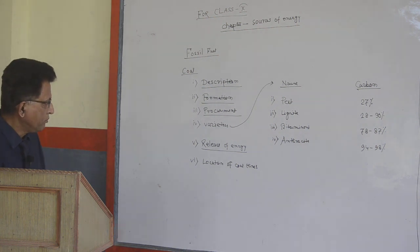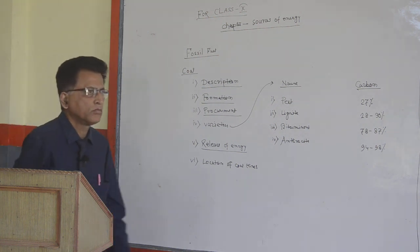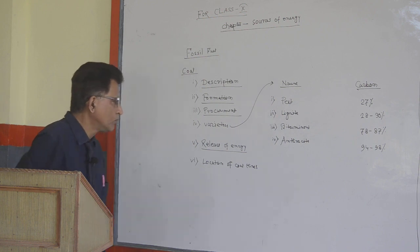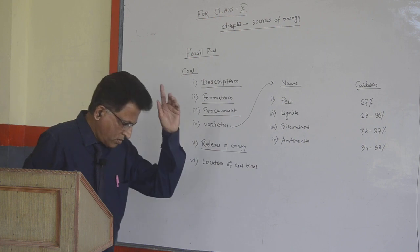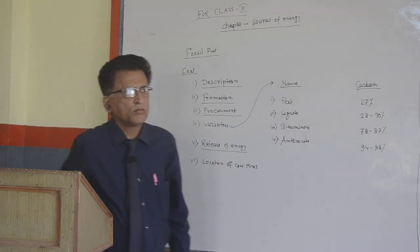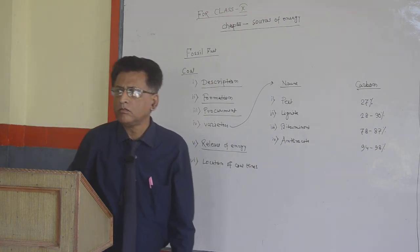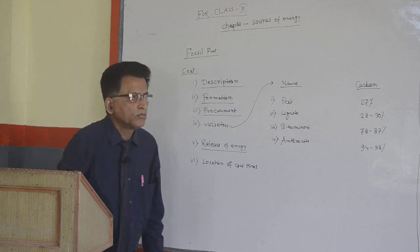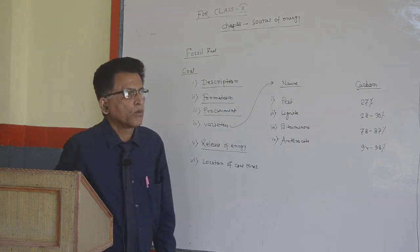In India, coal is found in: Number 1, Bihar and Jharkhand. Number 2, Madhya Pradesh and Chhattishgarh. Number 3, Odisha. Number 4, West Bengal.